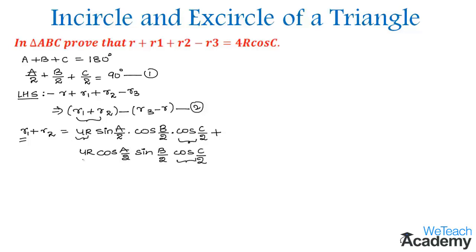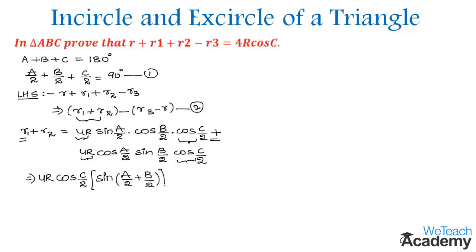From both terms, cos(C/2) and 4r are common factors. Taking them out, we get 4r·cos(C/2) multiplied by the remaining terms, which are in the form sin(A/2)·cos(B/2) + cos(A/2)·sin(B/2). This matches the formula sin(A + B), giving sin(A/2 + B/2).